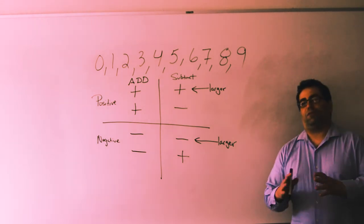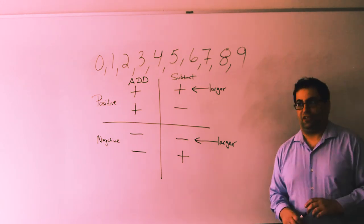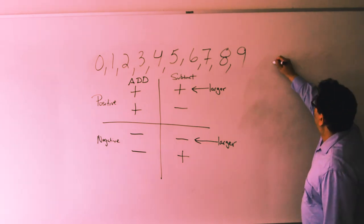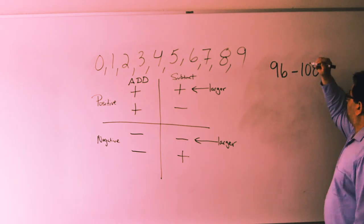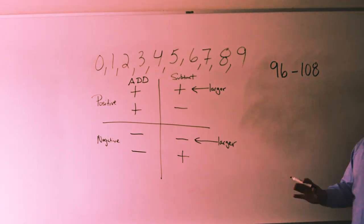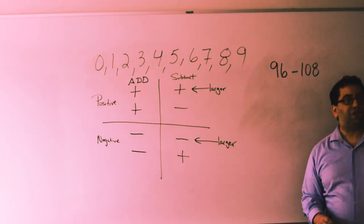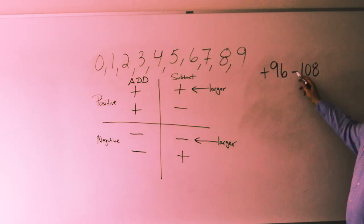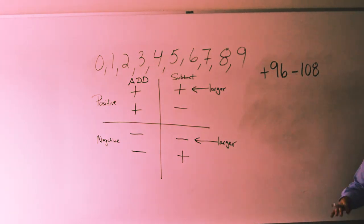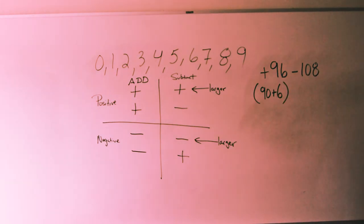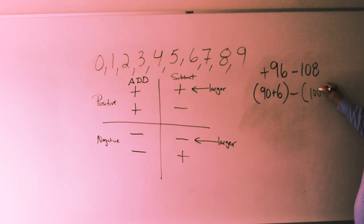Let's try some subtraction: 96 minus 108. First, look at your signs — we have a negative 108, and 96 has no sign so it's positive. A positive and a negative means we're going to subtract. Let's rewrite using base 10: 90 plus 6, minus 100 plus 8. Because we subtract with opposite signs, we rewrite 108 as 100 plus 8.